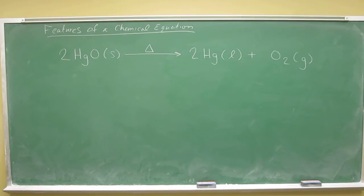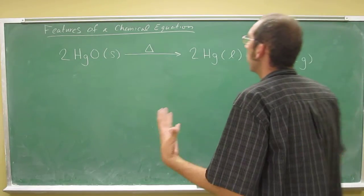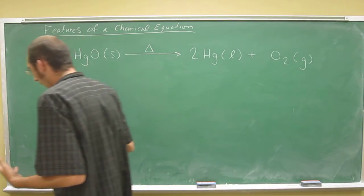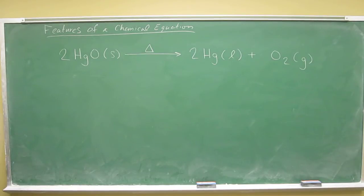Let's start the day off today talking about shorthand notation of describing a chemical change or a chemical process occurring. This is the shorthand notation that we as chemists use. We call it a chemical equation.